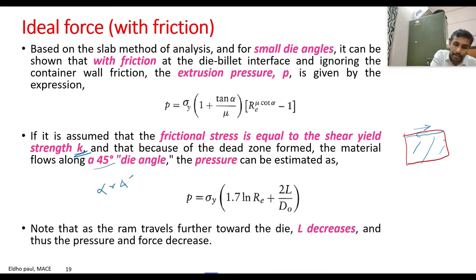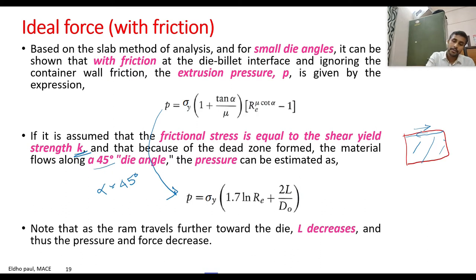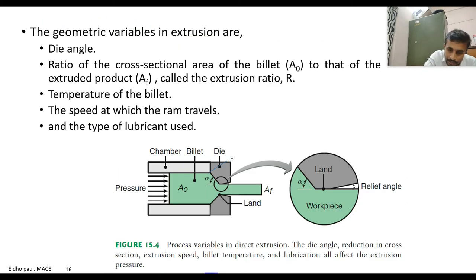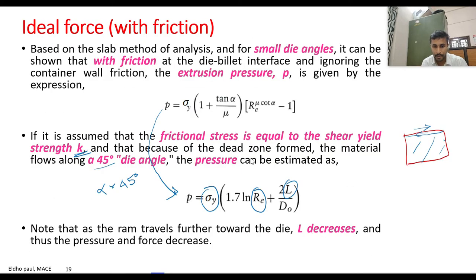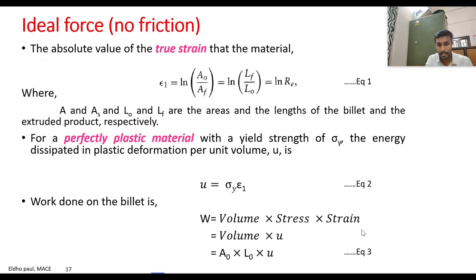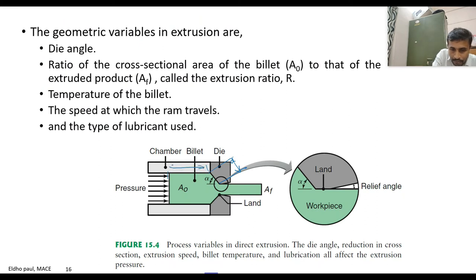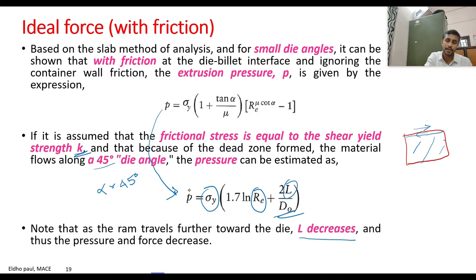Considering the sticking condition and alpha equal to 45 degrees, we can rewrite the equation. The important factors are: the R value (ratio of initial to final cross-section), sigma f or sigma y, the length of contact L between the workpiece and die during deformation, and d0, the initial diameter of the workpiece. As the ram travels further forward, L decreases, and correspondingly the pressure also decreases.